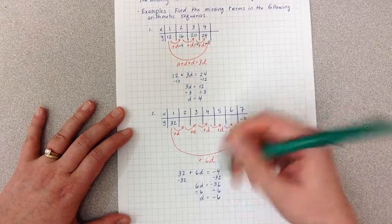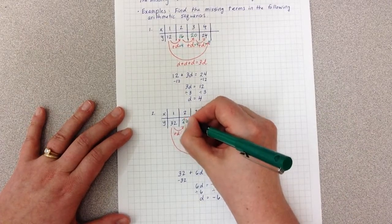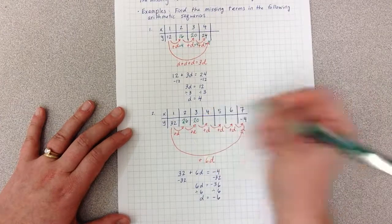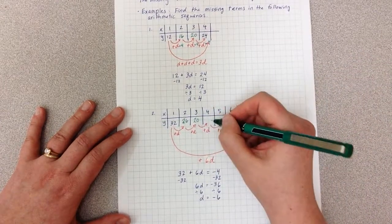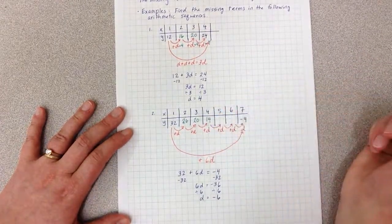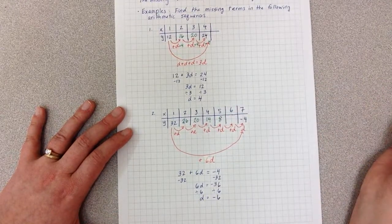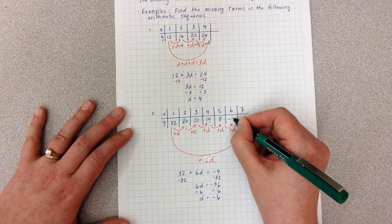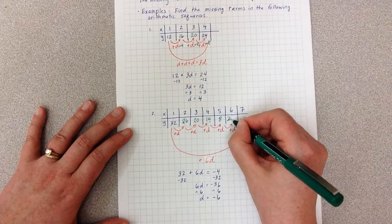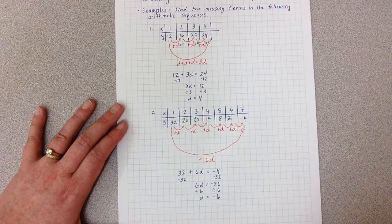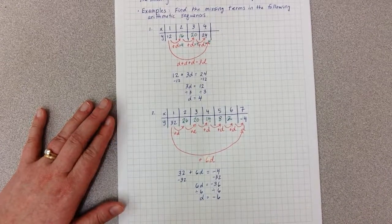So 32 plus negative 6 is 26. 26 plus negative 6 is 20. 20 plus negative 6 is 14. 14 plus negative 6 is 8. 8 plus negative 6 is 2. And just to double check, 2 plus negative 6 is negative 4.